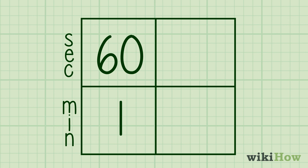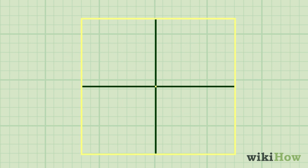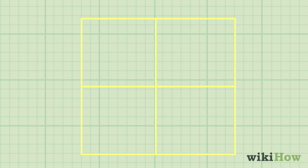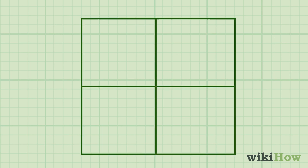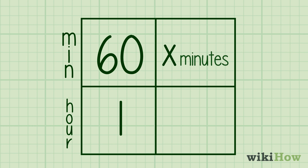In the second column, write the number of seconds you want to convert in the top row, then write that number divided by 60 in the second row. Repeat this same process in a new table to convert the minutes into hours, using the same conversion factor of 60 minutes and 1 hour.